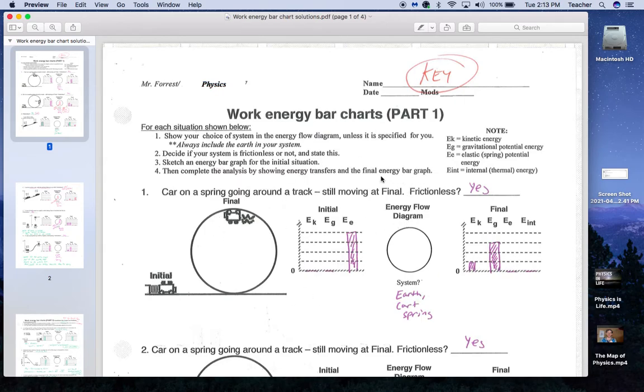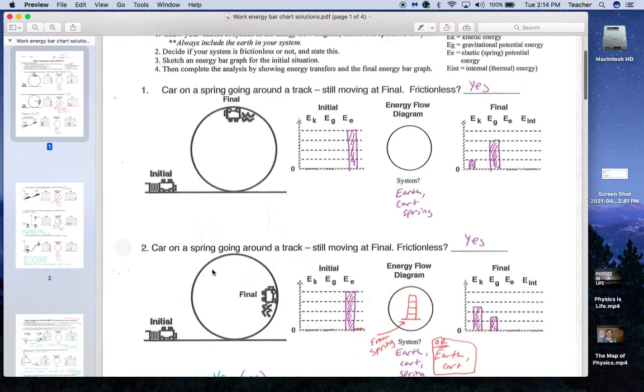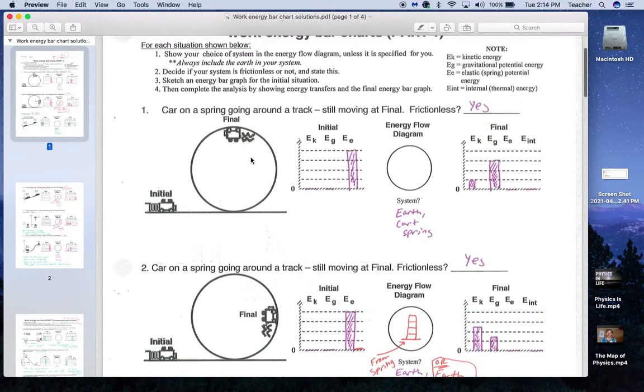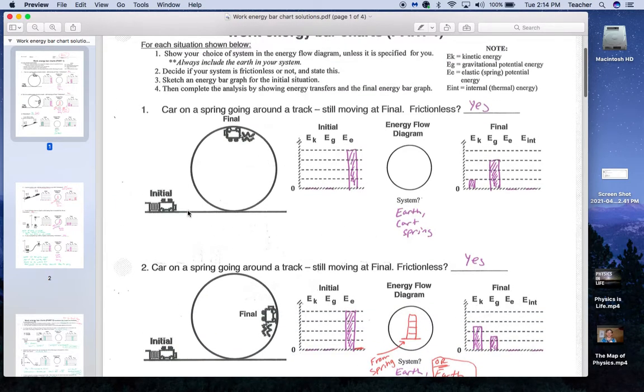The key thing, as you hopefully know by now, is we've got to decide whether there is or isn't friction. And we also need to think about our system. So in this case, I chose my system as being the earth, the cart, and the spring.